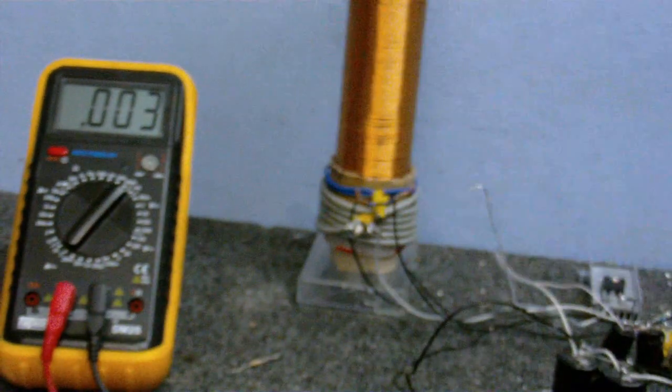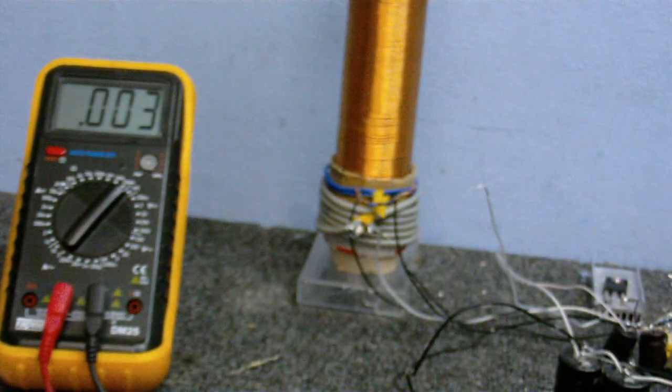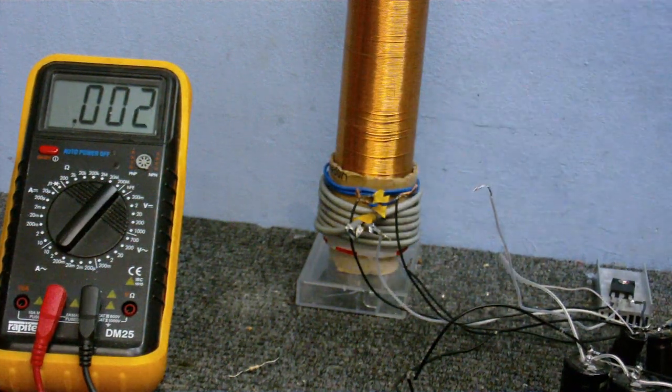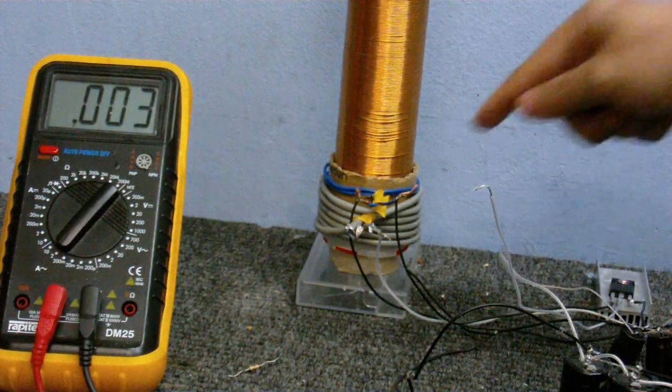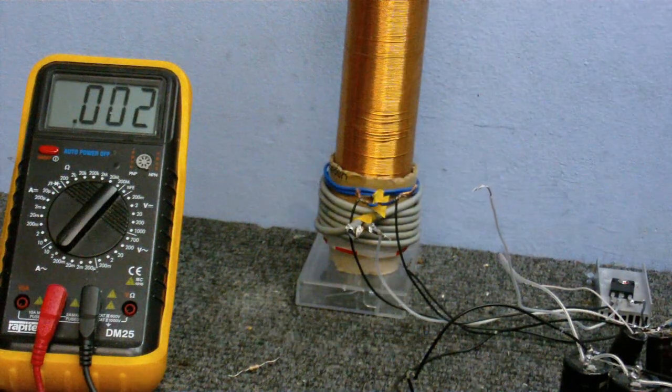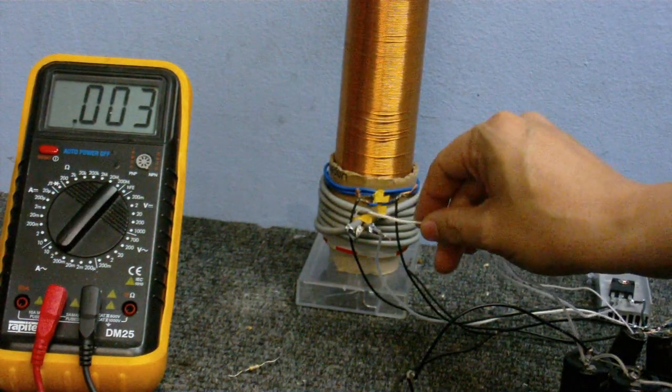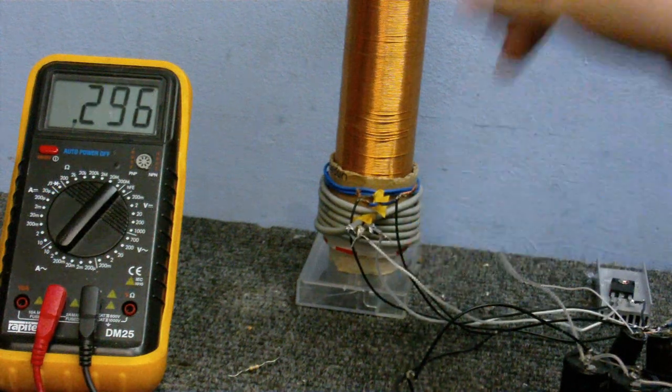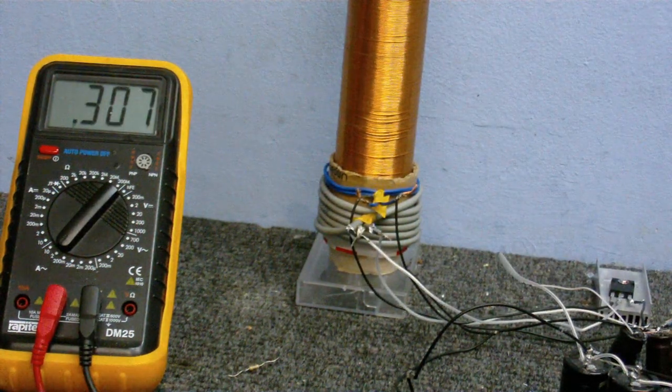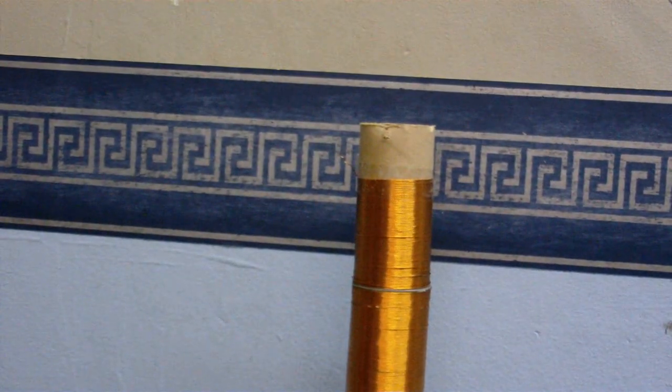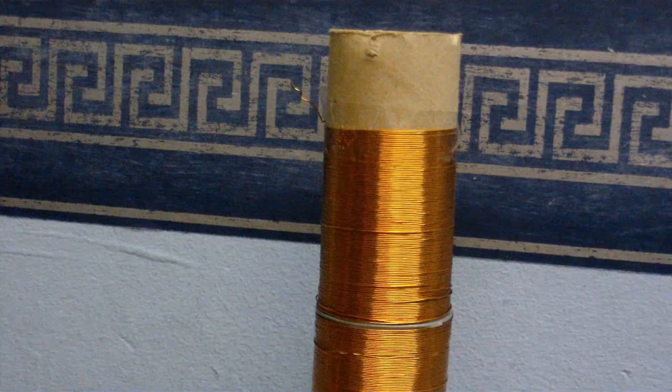I have my multimeter here measuring the current. At the moment, I haven't got the primary connected up, which is this six turns of thick wire here. There's the two turns of feedback and the coil itself. So I'm going to connect up the coil. We can see how much power it's taking. About 330 milliamps. Not getting any sparks at the moment.